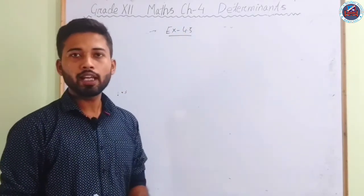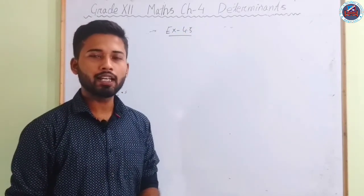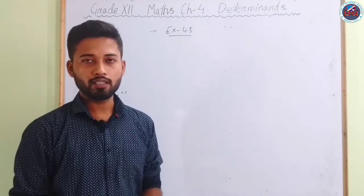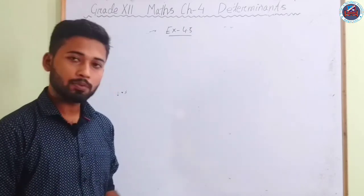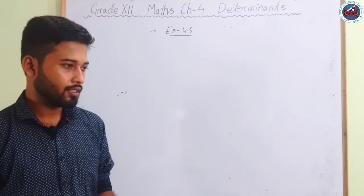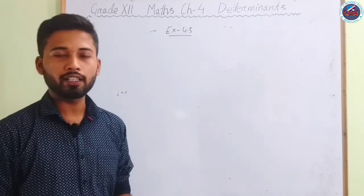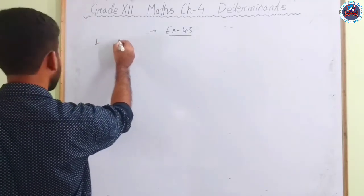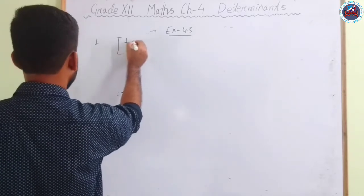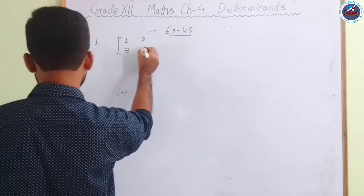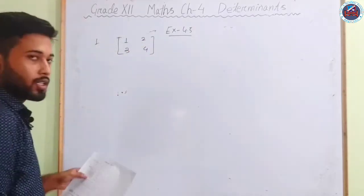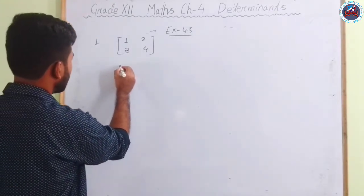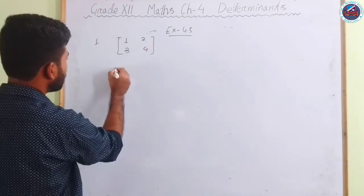We now look at Exercise 4.5, which is one of the most important exercises in this chapter. The first question asks us to find the adjoint of the matrix [[1,2],[3,4]]. To find the adjoint, we first find the cofactors of each element.